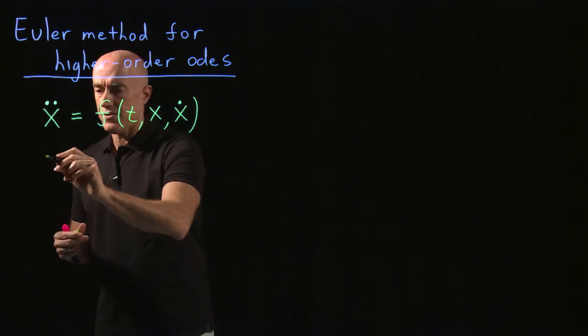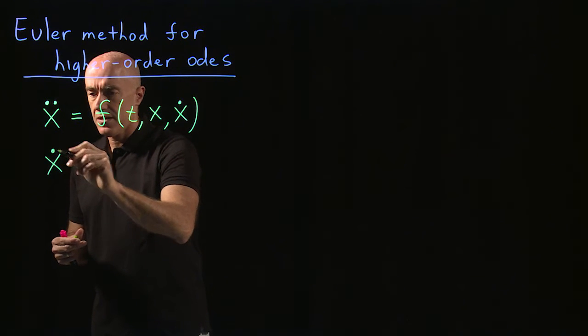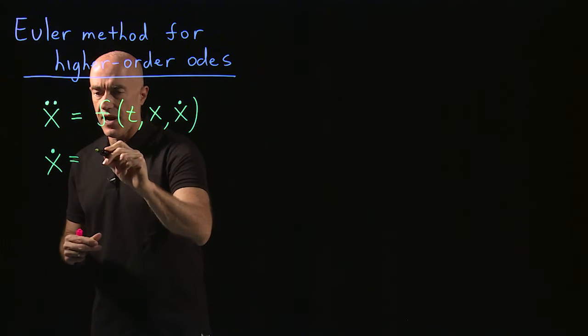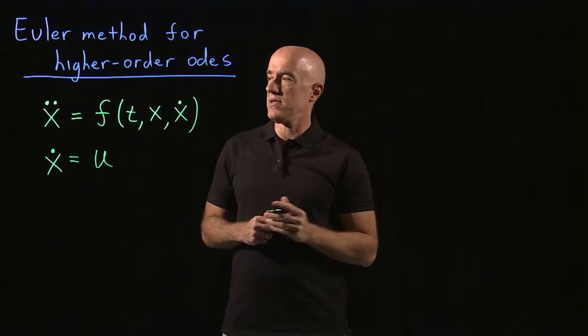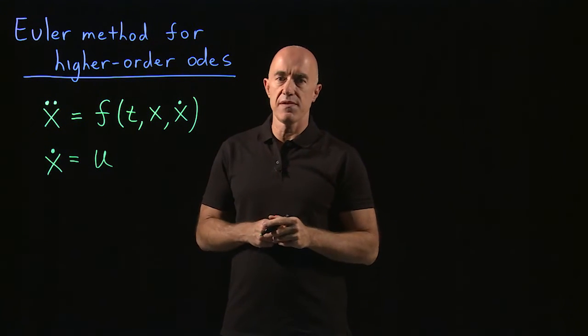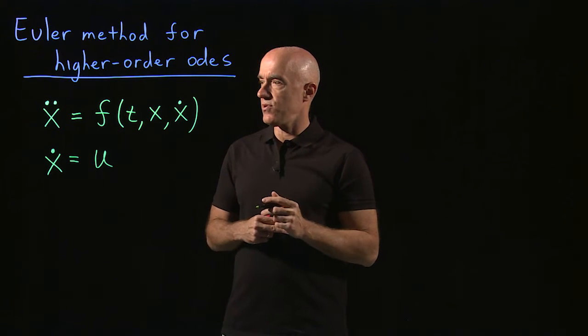So how do you write a second order equation as a system of two first order equations? Well, first you say that x dot is equal to define a new variable u. Going back to Newton, x would be position, u would be velocity. So x dot equals u.